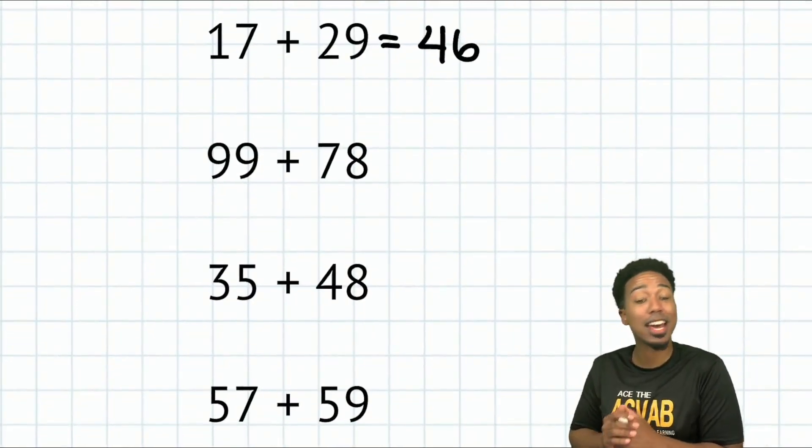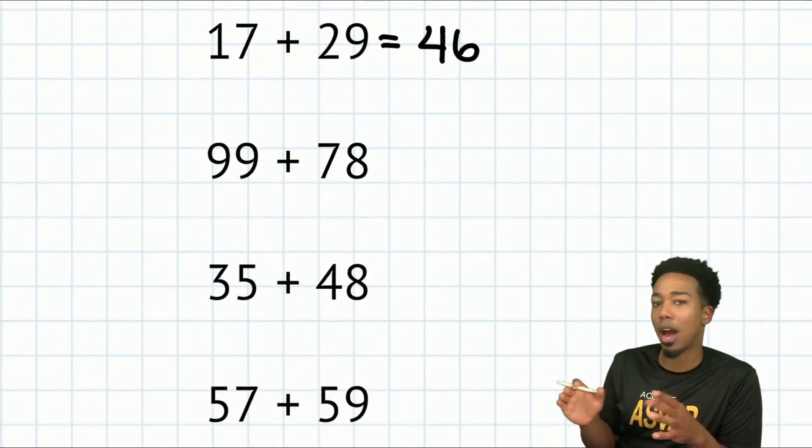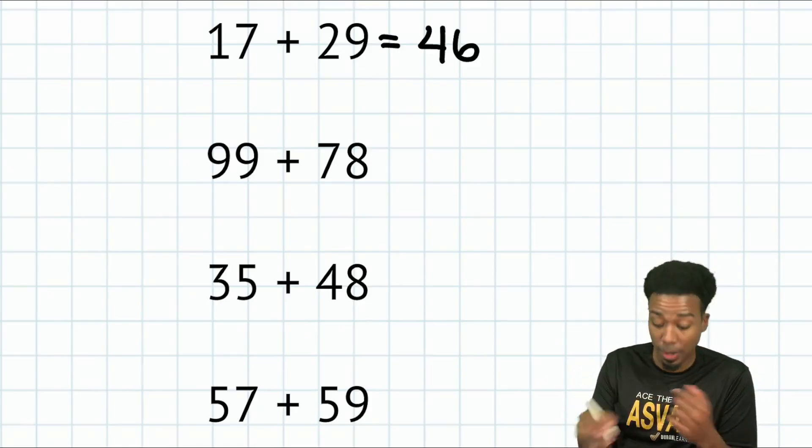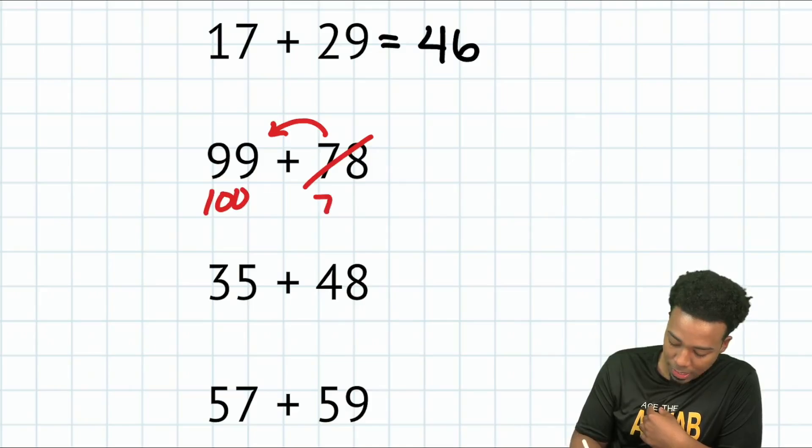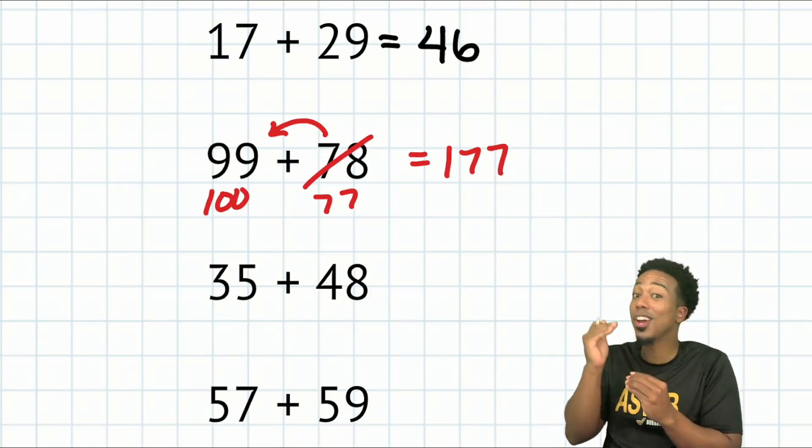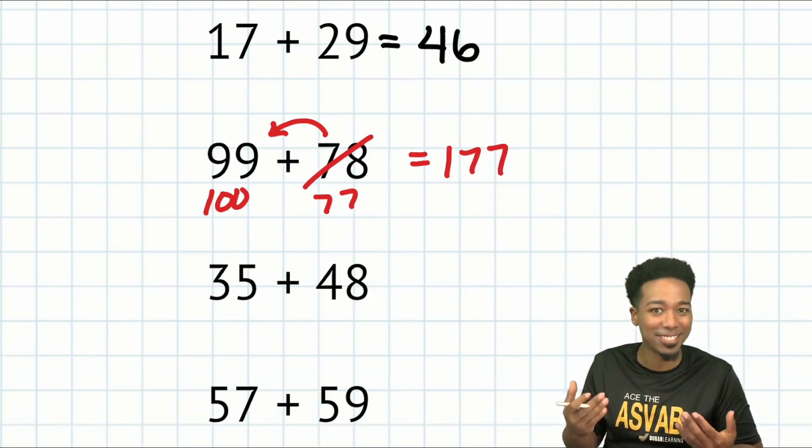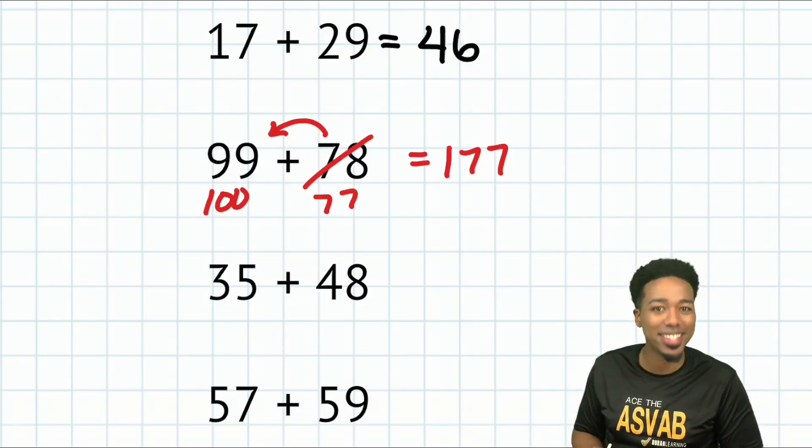Next up, we have 99 plus 78. This is one where I won't have to split anything up. I'm just going to borrow one. If I take one from right here and put it over here, this is 100. And this is 77. So that becomes 177. Again, noticing that I'm really close to 100, we can take advantage of that. Give ourselves a much easier time.